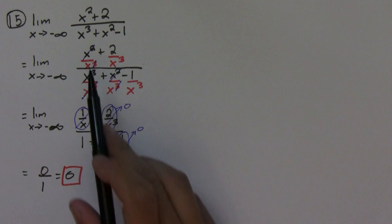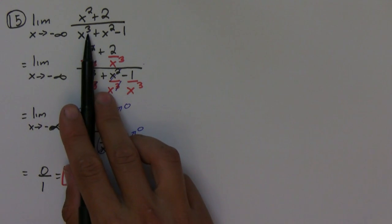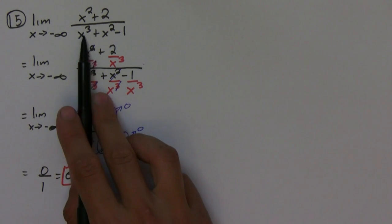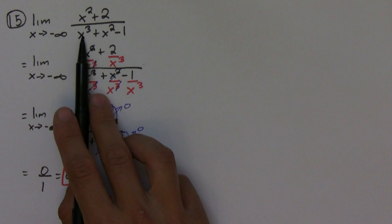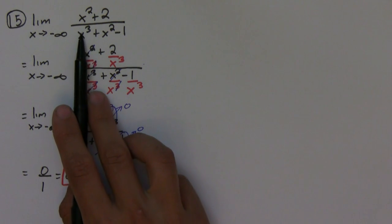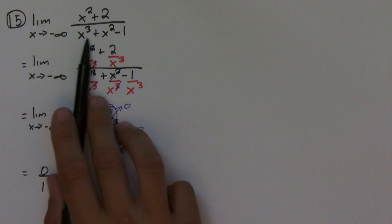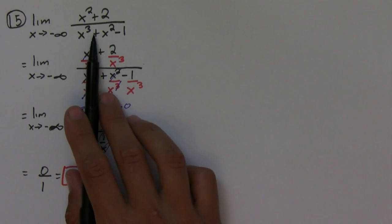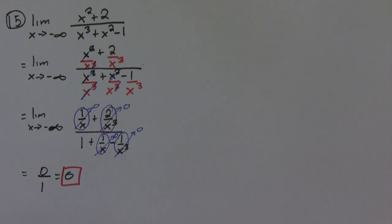If you look at the original expression, notice that the degree in the denominator is bigger than the numerator. That means the denominator is going to overcome the entire fraction and the whole thing gets smaller and smaller, which is why it went to zero.